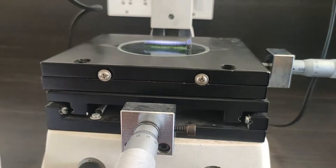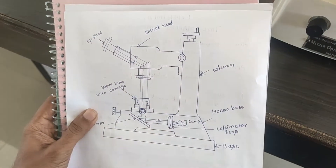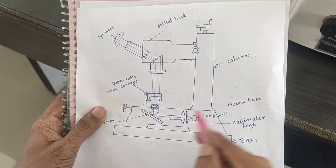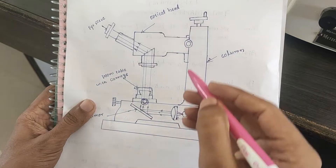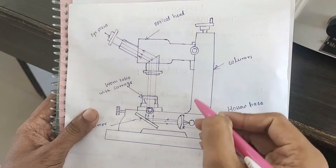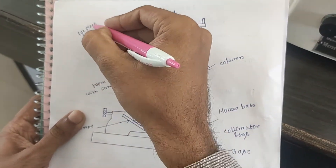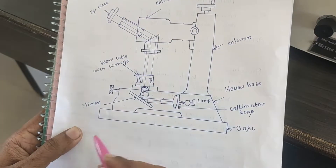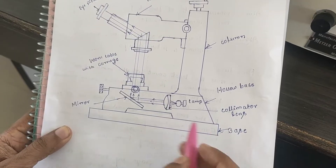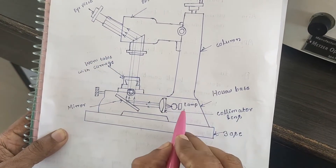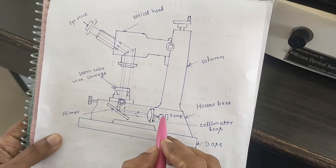Now I am going to show the figure of the tool maker's microscope. This device mainly contains: the column, the optical head, the eyepiece, the work table with carriage, the base, the mirror, and a monochromatic lamp — a light source used to measure the unknown parameters.